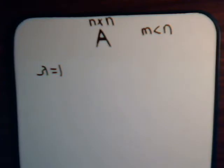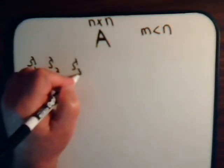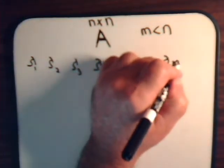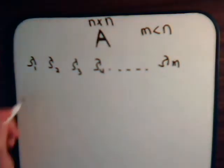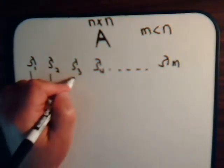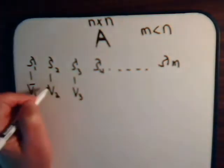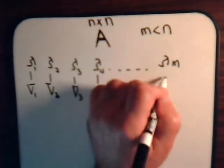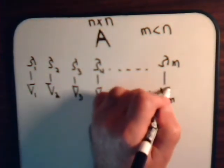But here, let's say that we have distinct eigenvalues: lambda 1, lambda 2, lambda 3, lambda 4, on out to lambda m, and each one has an eigenvector associated with it. These eigenvectors are linearly independent.